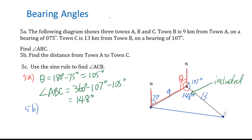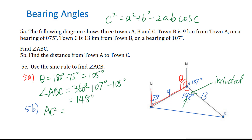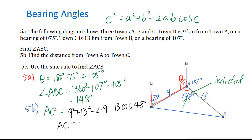For the cosine law: C squared equals A squared plus B squared minus 2AB cosine C. Therefore for AC: AC squared equals 9 squared plus 13 squared minus 2 times 9 times 13 times cosine 148 degrees. You will get AC equals 21.2 kilometers.